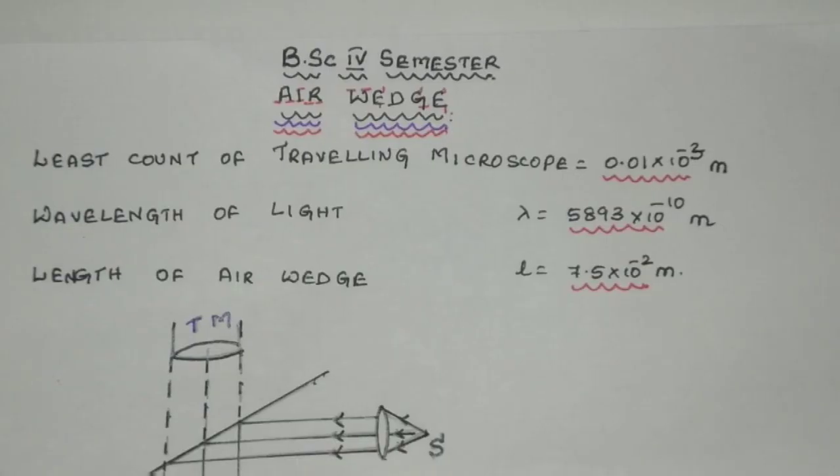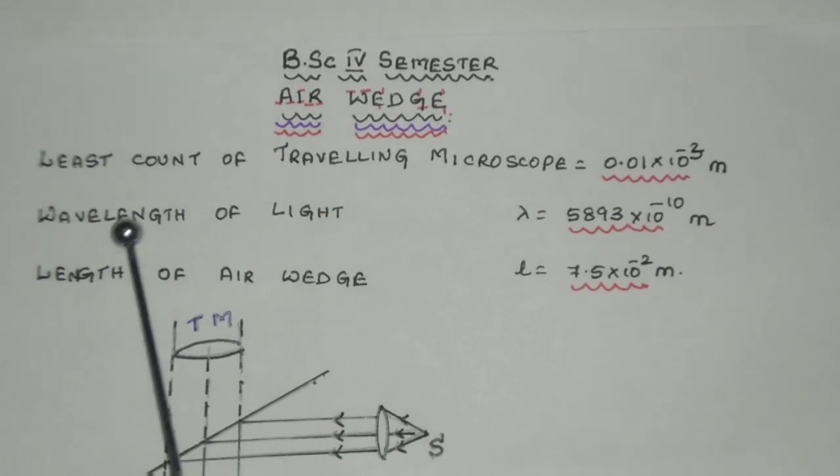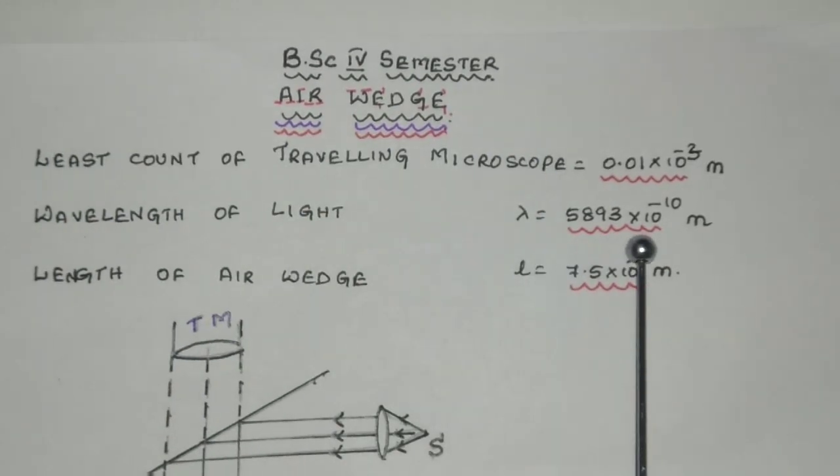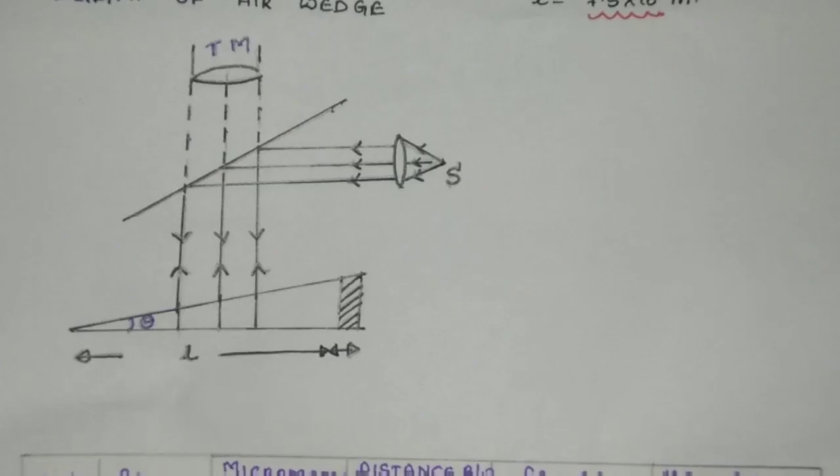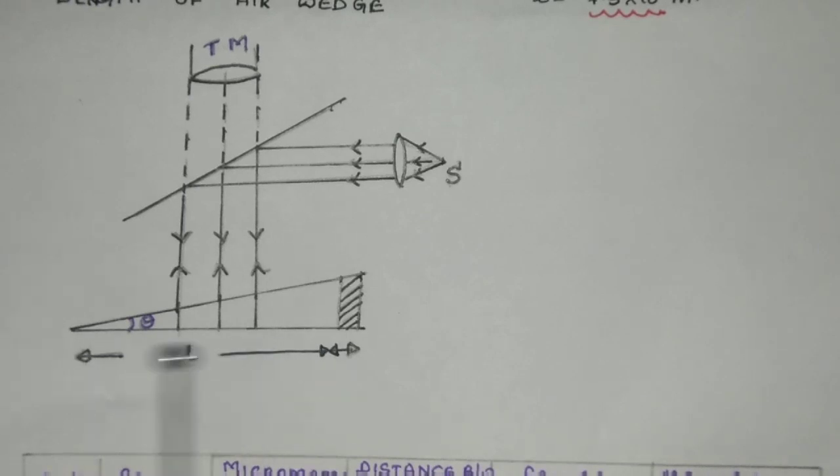The least count of the travelling microscope is 0.01 mm or 0.01 × 10⁻³ m, and the wavelength of the light is 5893 Angstrom units. The length of the air wedge is measured as 7.5 cm or 7.5 × 10⁻² m. We measure the length of the air wedge between the two end points, which corresponds to the thickness of the paper.